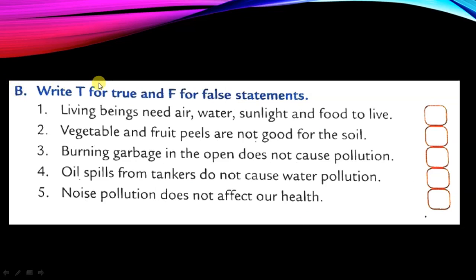Part B: write T for true and F for false. Living beings need air, water, sunlight and food to live - answer is True, all living beings need these things to live. Vegetables and fruit peels are not good for the soil - this statement is False.